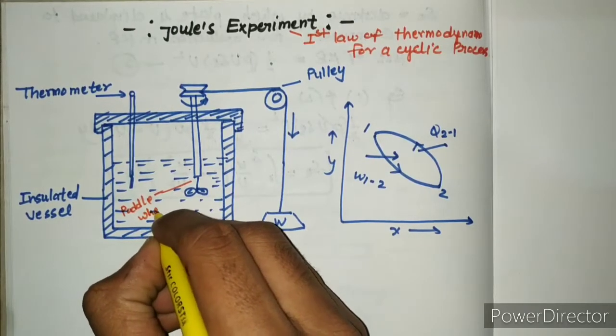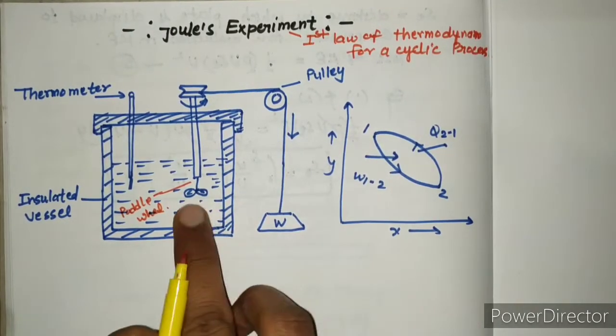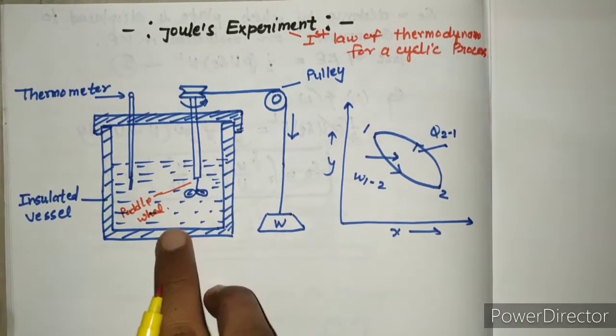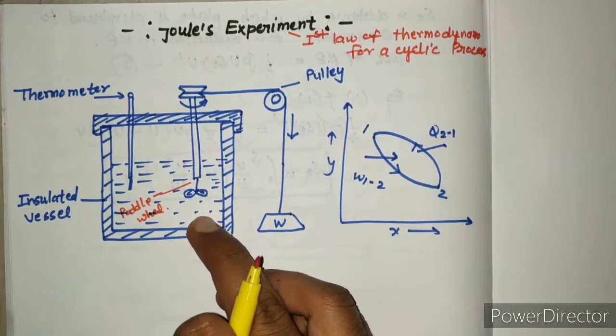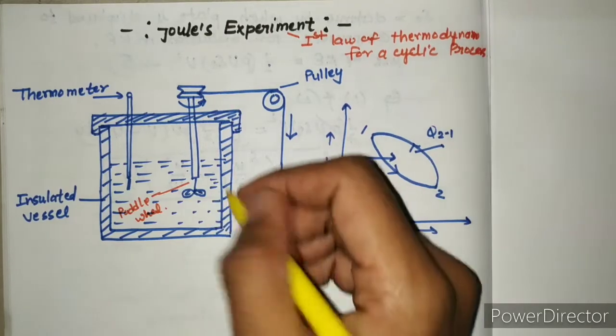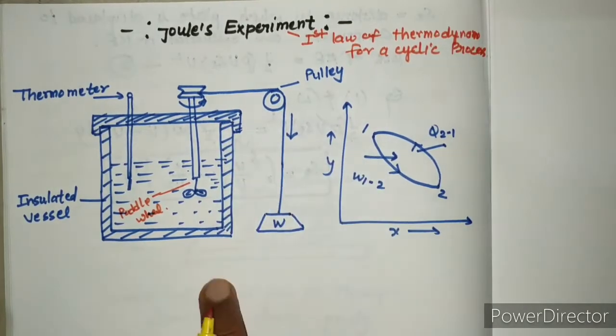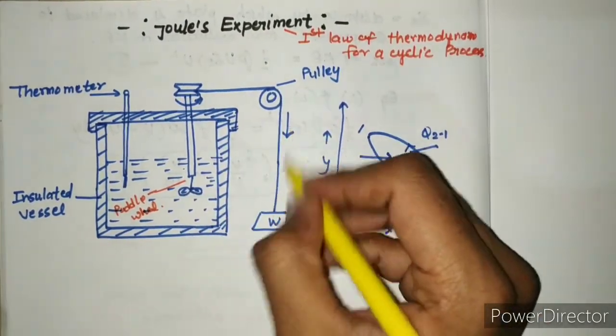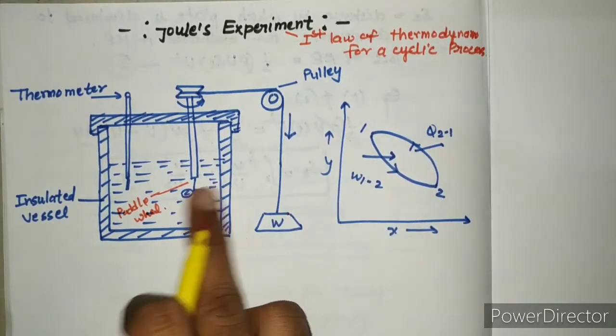The paddle wheel is used to supply work. When work is supplied to water, work is measured by the falling of the mass. When the paddle wheel works, then the mass will move down.